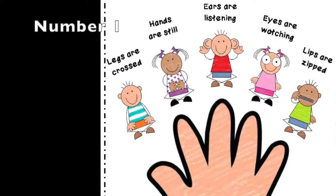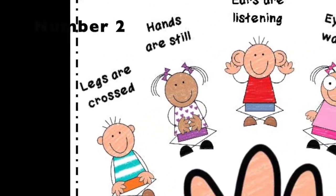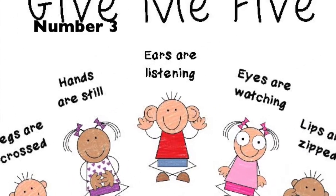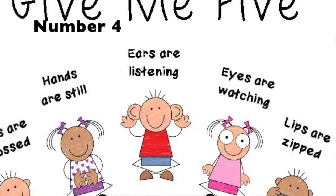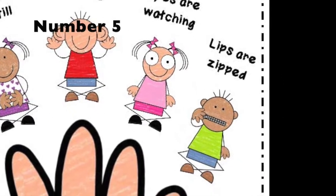Number one, legs are crossed. Number two, hands are still. Number three, ears are listening. Number four, eyes are watching. And number five, we're going to zip it, lock it, and put it in our pocket.